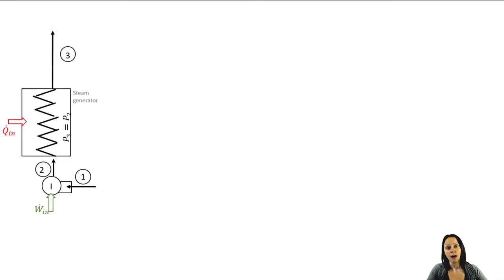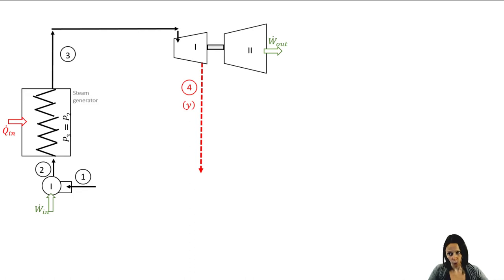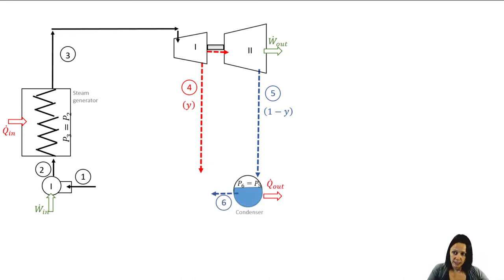Let's look at the cycle. From state one to state two, you've got an ideally isentropic compression process. Then you've got a constant pressure heat addition process. Then you expand in a two-stage turbine — the first is the high-pressure turbine and the second is the low-pressure turbine. Part of the steam is extracted at state four. The rest is allowed to pass on to the low-pressure turbine and fully expand to state five, where it passes through a condenser — a constant pressure heat rejection process.